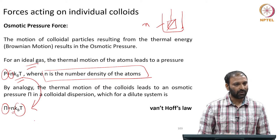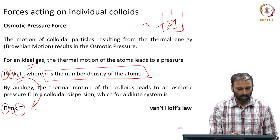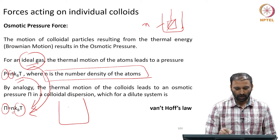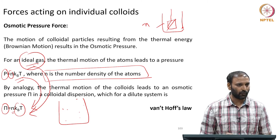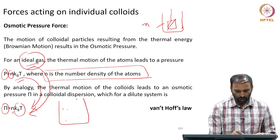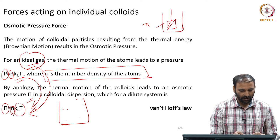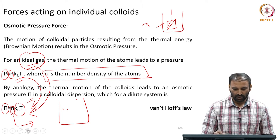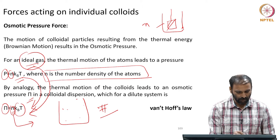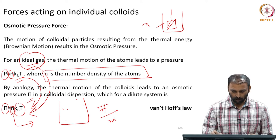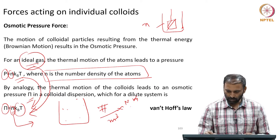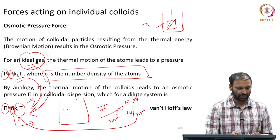This analogy has been translated to particulate systems, which is valid because we are working with very dilute dispersions — analogous to an ideal gas. Here N is the number density of the particles, i.e., number of particles divided by volume of the dispersion. Units check: N in m⁻³ times kBT in joules (newton·meter) gives newton per meter squared, which is pressure.